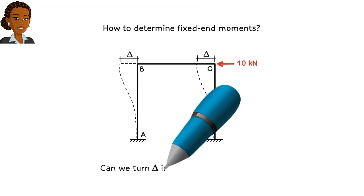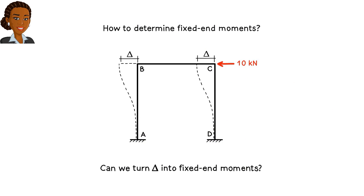Would it be possible to turn the lateral displacement, represented with delta, into fixed end moments? That is to say, does a bending moment develop at the fixed ends of a member if it experiences a relative displacement like delta? To answer the question, we can use the slope deflection equations.